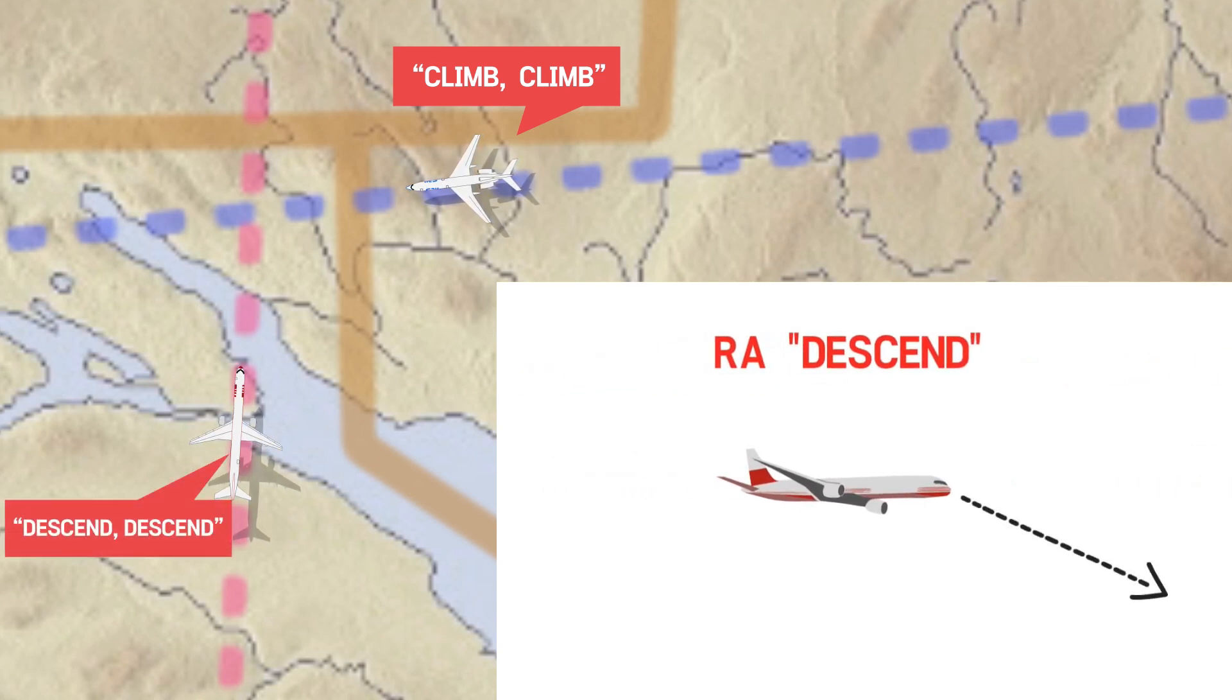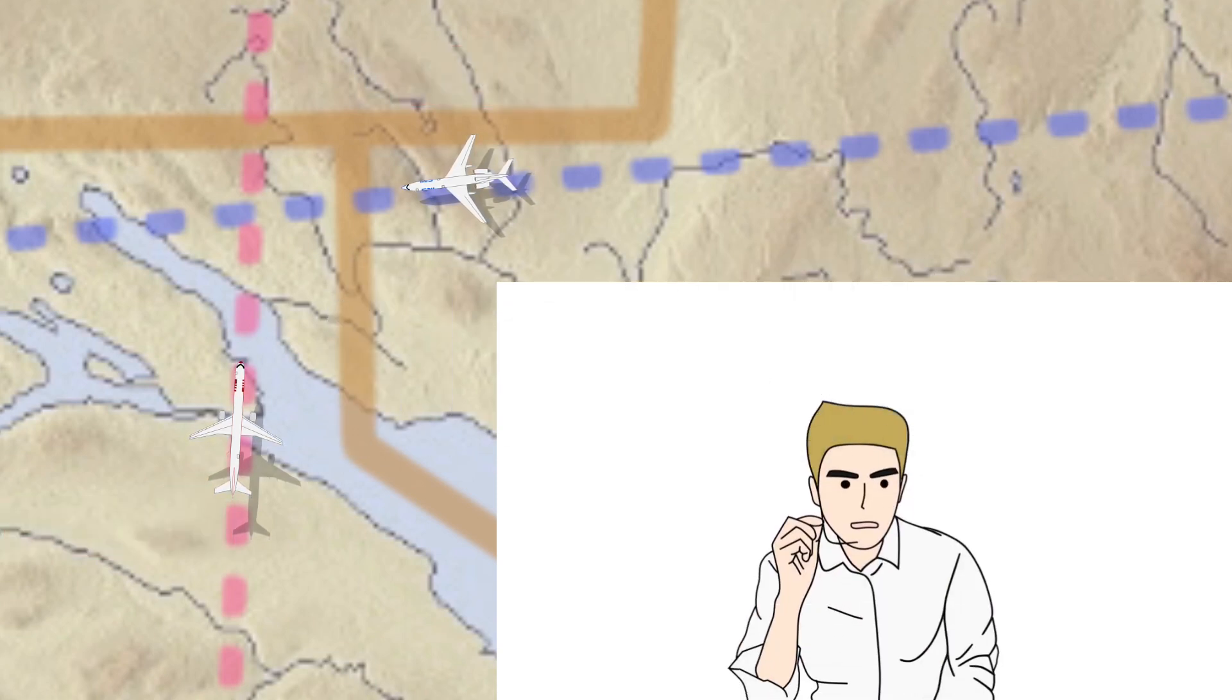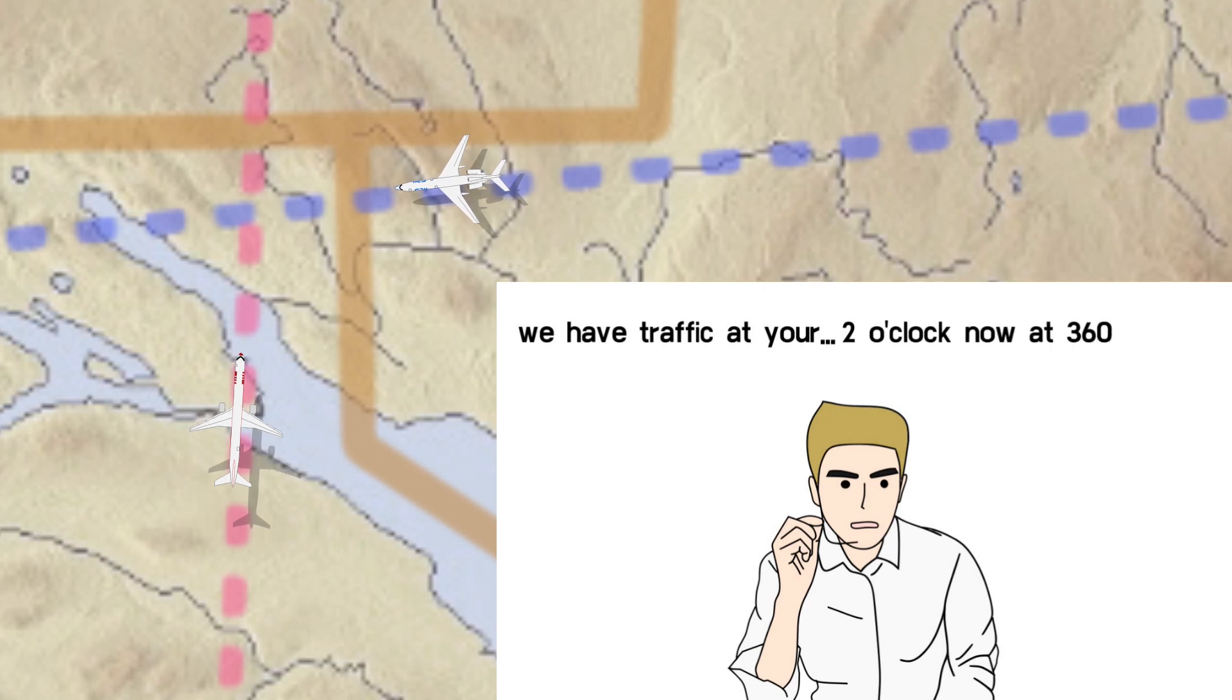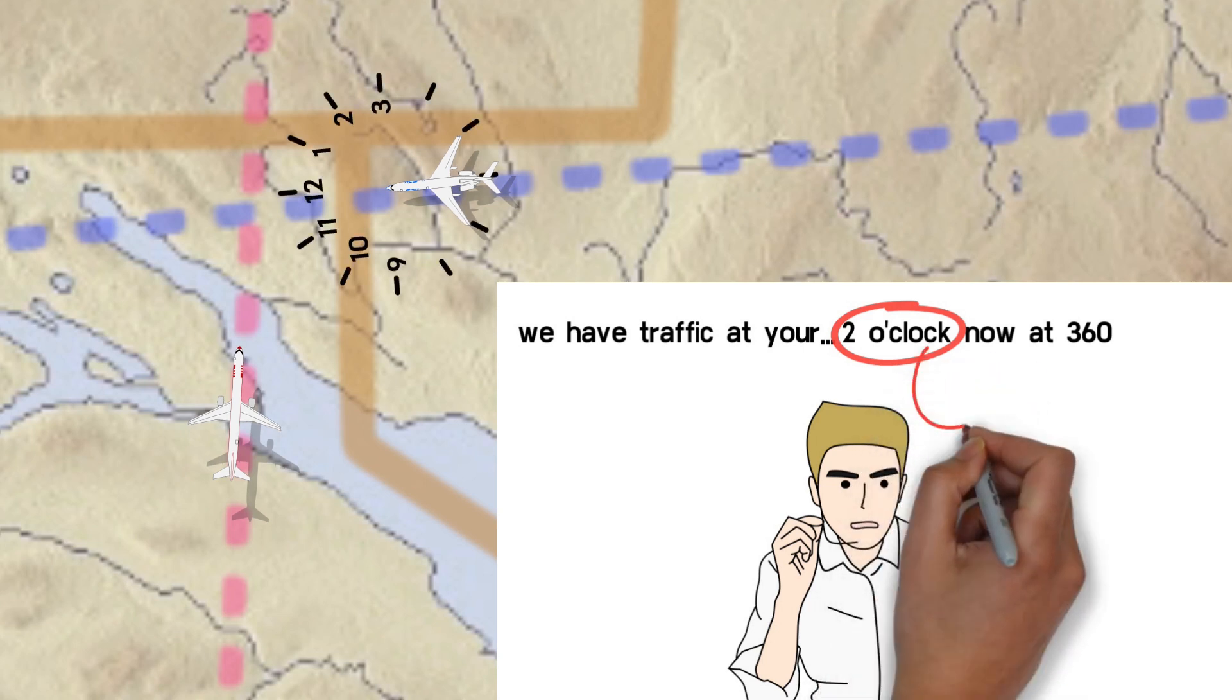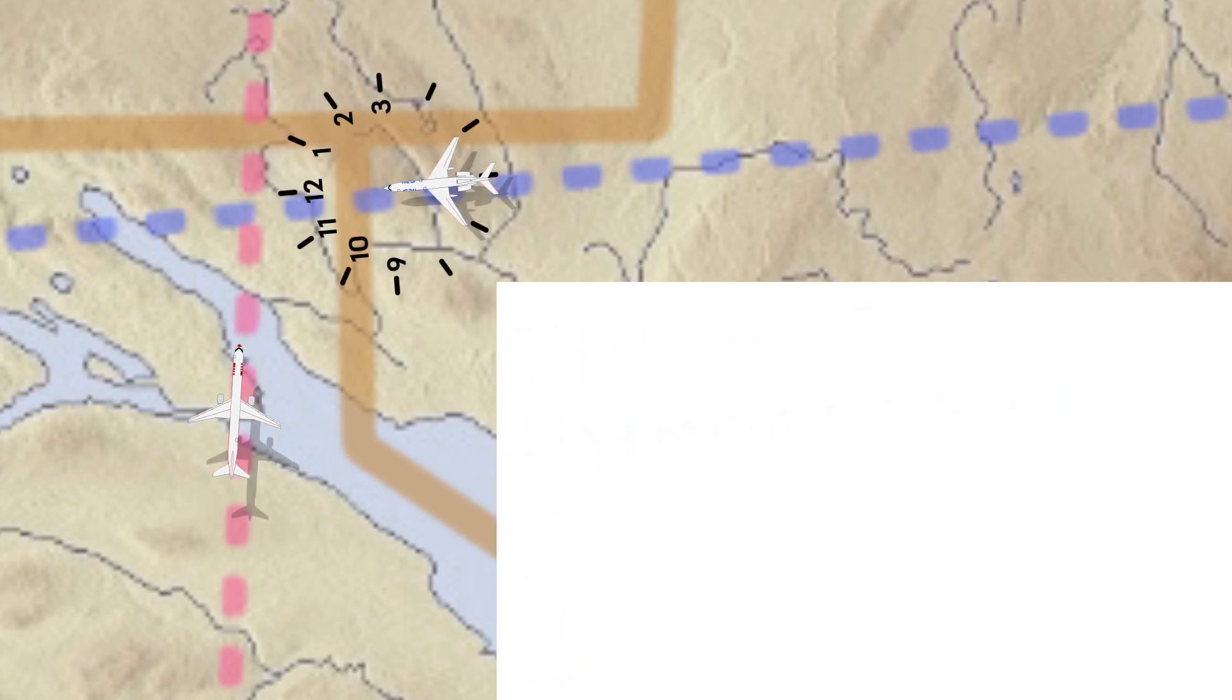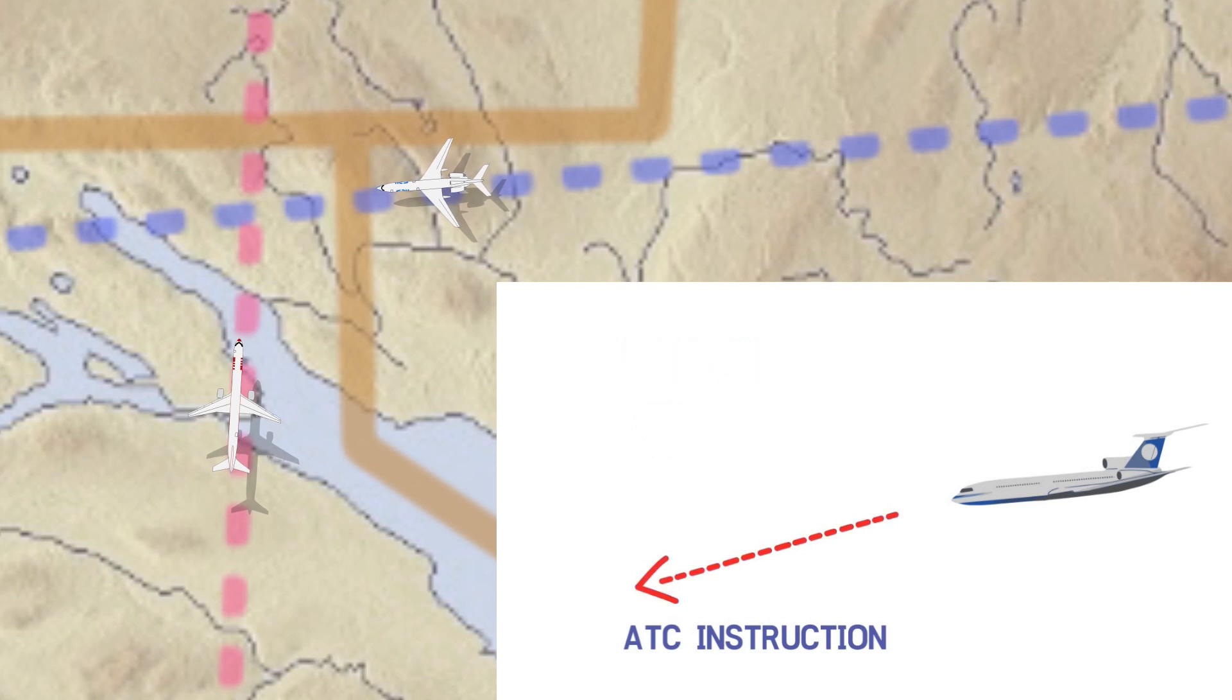DHL-611 started to descend. The controller instructed BTC-2937 to expedite descend to flight level 350 once again, and issued traffic information for DHL-611. However, at that time, the controller incorrectly informed BTC-2937 that DHL-611 was at 2 o'clock, but it was actually at 10 o'clock. Confused as the controller's instruction and TCAS warning contradict each other, BTC-2937 decided to trust the controller's instruction and continued descending.